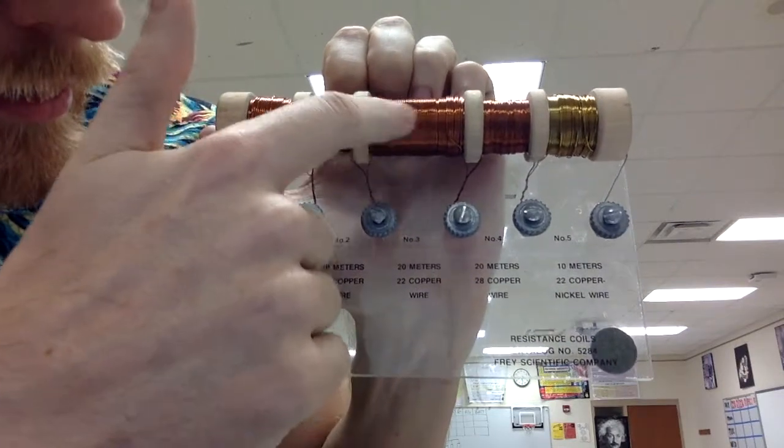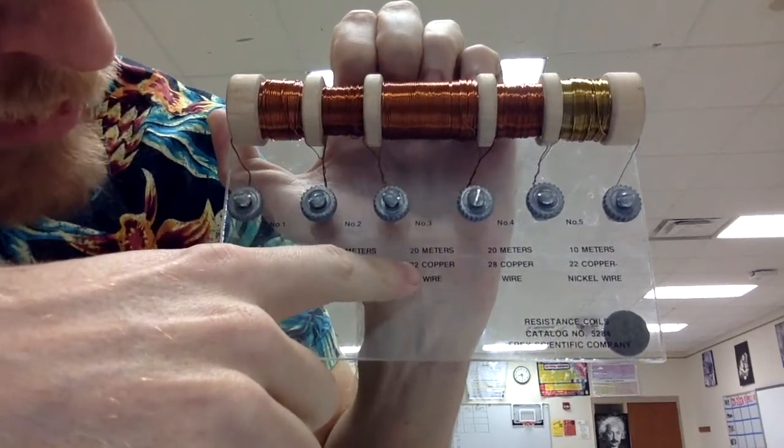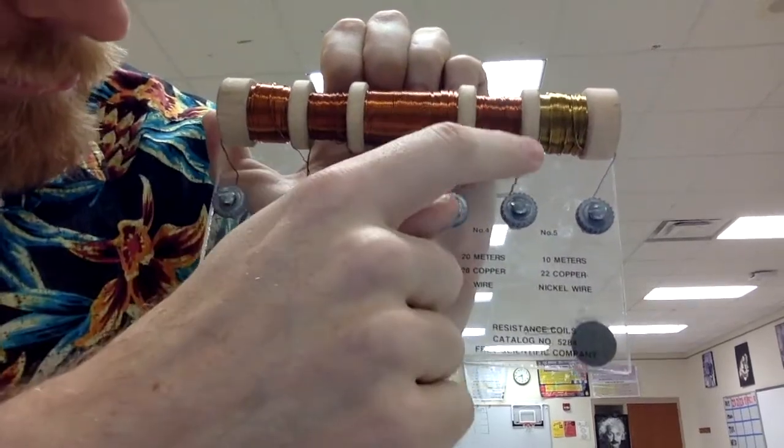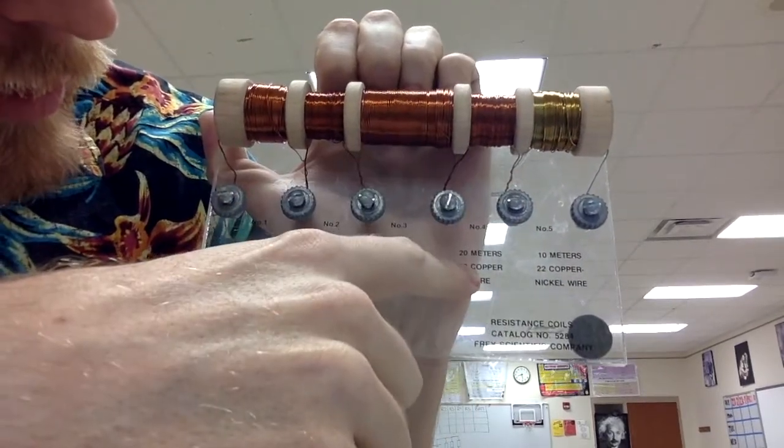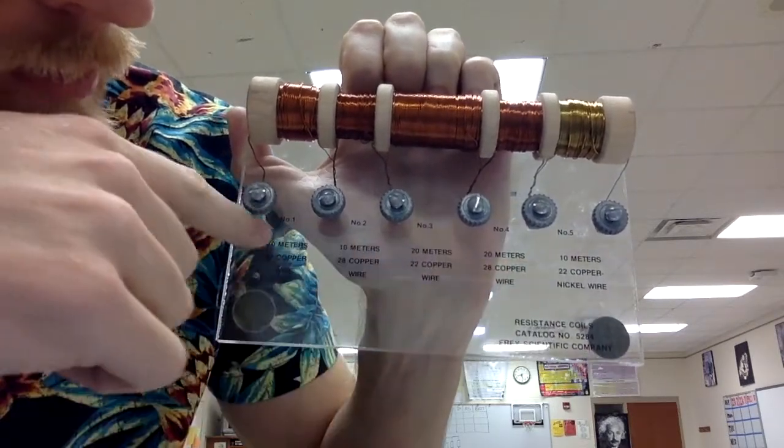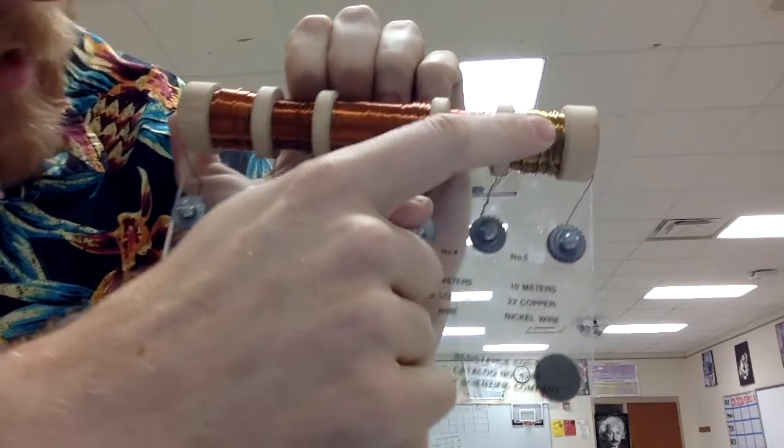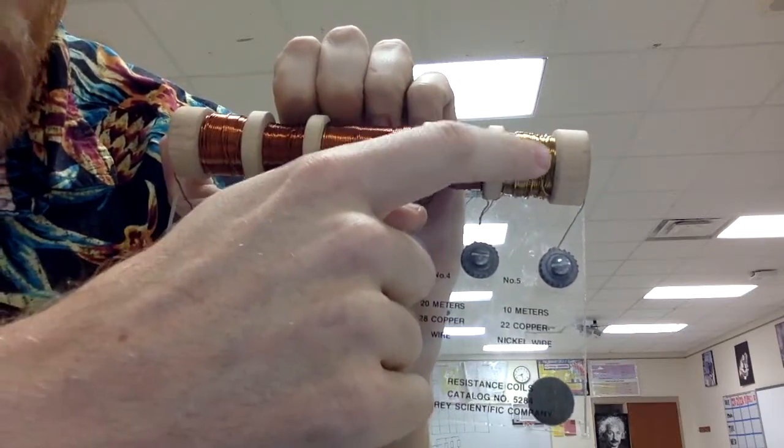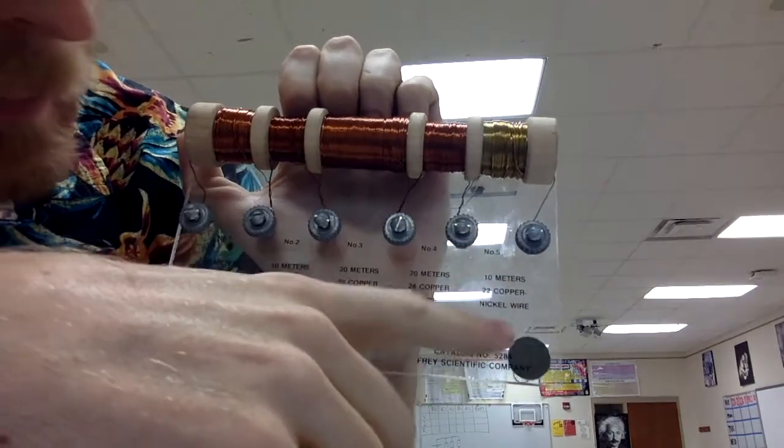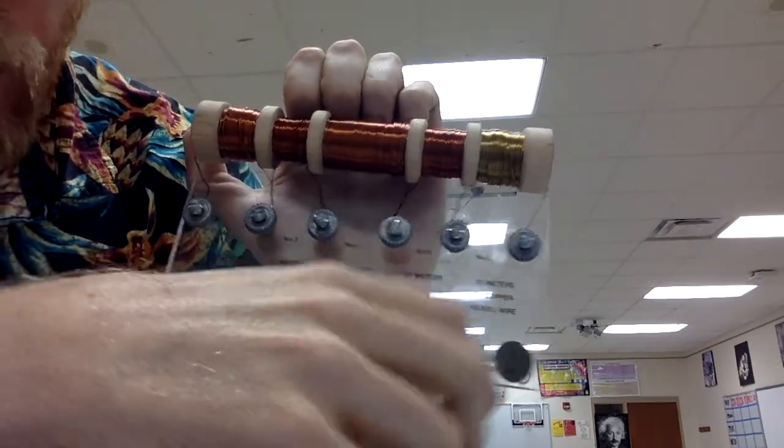And then this is a third wire. It's 22 gauge again. It's copper, but it's 20 meters long. So there's a lot more wire. It's a longer wire. This one is also 20 meters long, but the gauge is 28. It's still copper. So all four of these are copper. And this one is a mixture. It's an alloy. It's a copper and nickel alloy. So it's 10 meters, 22 gauge, and it's a mixture of copper and nickel.